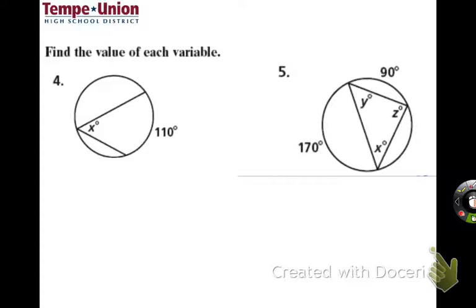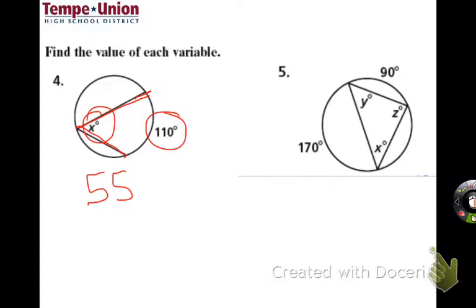For the next problem, we want to find x. The inscribed angle is intercepting an arc of 110 degrees, so x equals one half of that: x = 55.